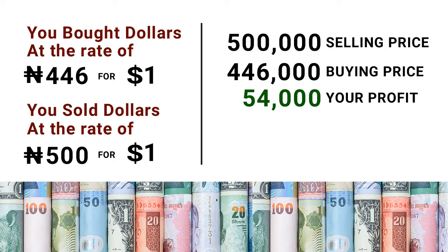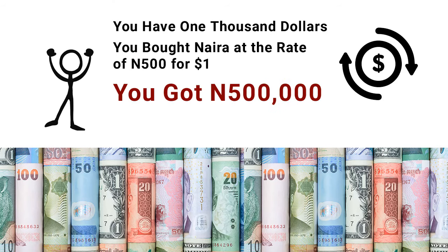Now let's do another example. The first example: you saw that the dollar was going to rise, you bought it, it rose, and you sold it back. Now let's do the inverse — selling high and buying low. In this example, you have one thousand dollars in your hand, not naira. You went to the bureau de change and sold the one thousand dollars at the rate of 500 naira each. The bureau de change gave you 500,000 naira in exchange for your one thousand dollars.